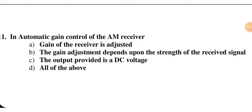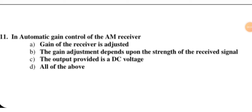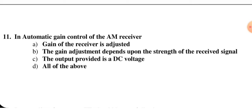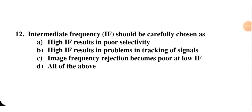Next question: in automatic gain control of an AM receiver — gain of the receiver is adjusted, the gain adjustment depends upon the strength of the received signal, and the output provided is a DC voltage. All of the above is correct for automatic gain control, so D is the right option.